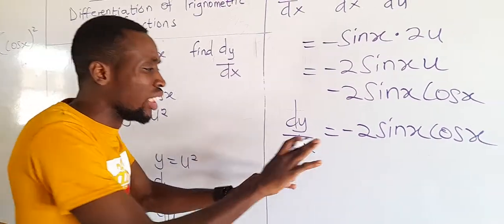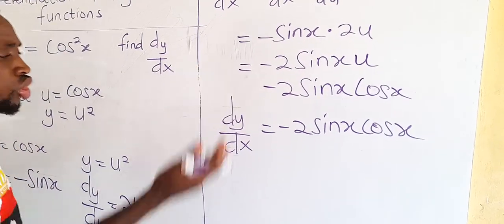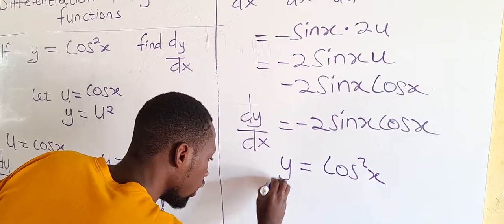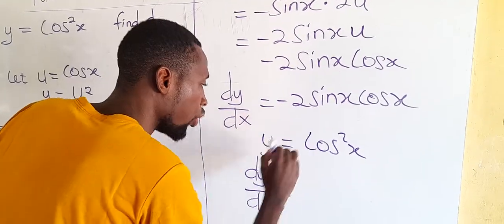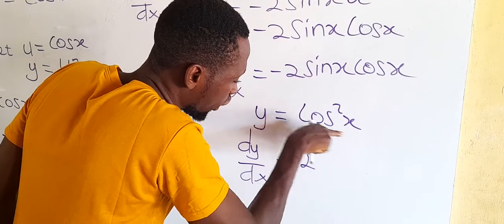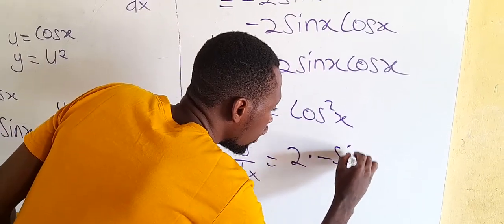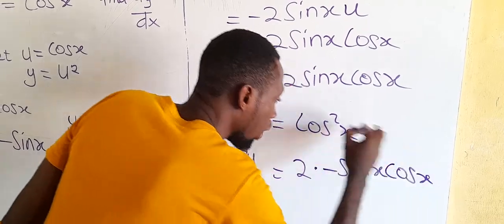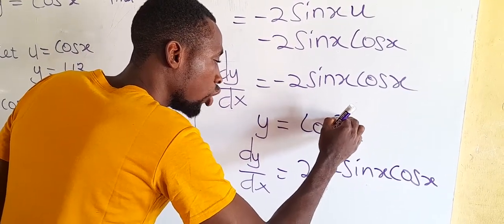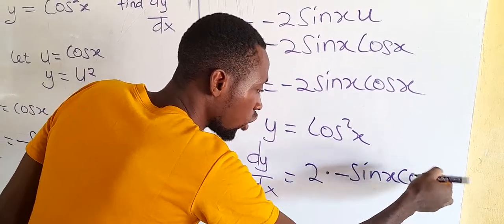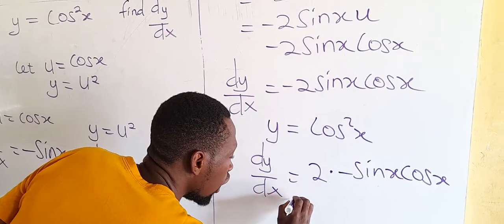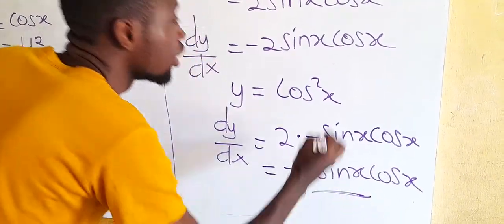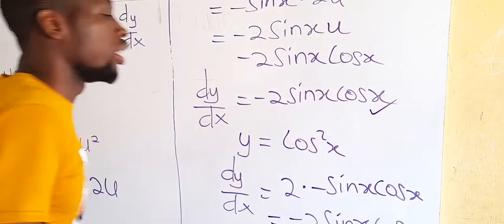Now I want to show you how to do it very fast without going through the full chain rule process — that's the direct method. If y equals cos squared x, dy/dx is found by: drop the exponent 2, differentiate the base cos x to get negative sin x, repeat the base cos x, and subtract 1 from the exponent to get 1, so cos x to the power 1 is cos x. In total, you get negative 2 sin x cos x — the same answer as before.